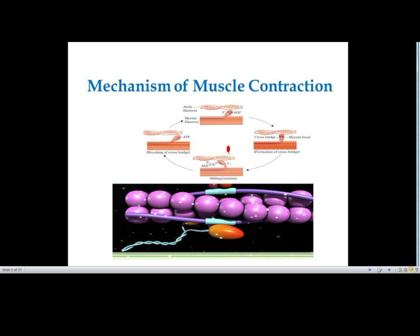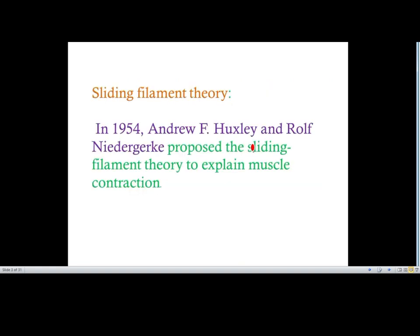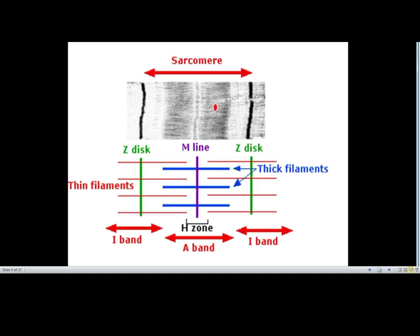The theory related to muscle contraction is the sliding filament theory. In 1954, Andrew F. Huxley and Rolf Niedergerke proposed the sliding filament theory to explain muscle contraction. The functional unit we examine is the sarcomere.